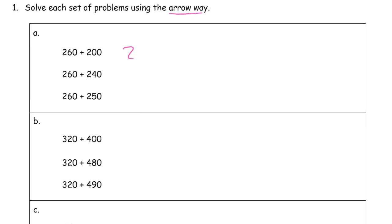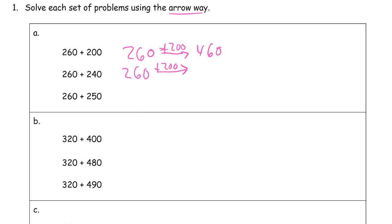So 260 — we can add all 200 at once. Plus 200 is 460. Now for 260 plus 240: start with the 260 and we're going to add the 200 first, because when you're doing mental math you usually add the hundreds first, then the tens, and ones last. We've got 460, and then we're adding the 40. 60 and 40 is another 100, so that's 500.